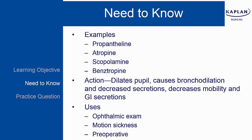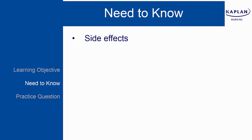For patients with bradyarrhythmias, we can give atropine. If a client is experiencing urinary incontinence, we could treat them with propanthelene. Oxybutynin is an anticholinergic used as a urinary tract spasmodic.